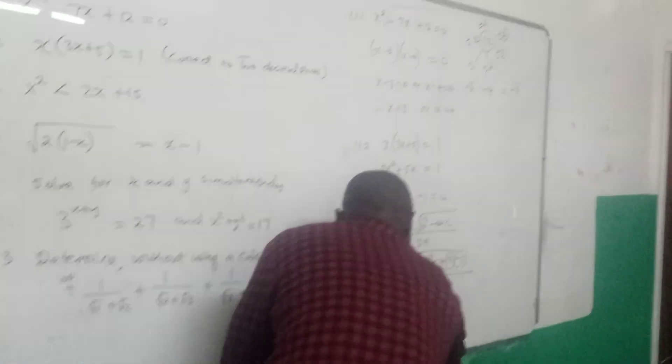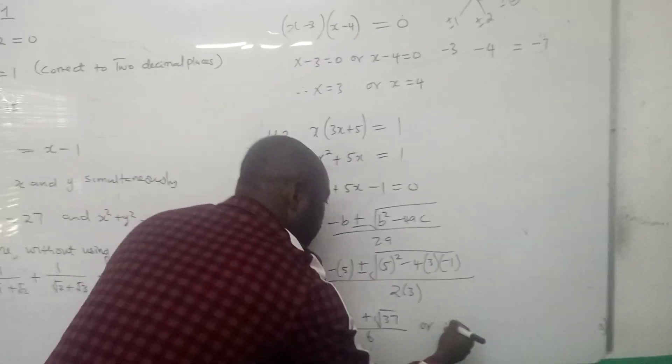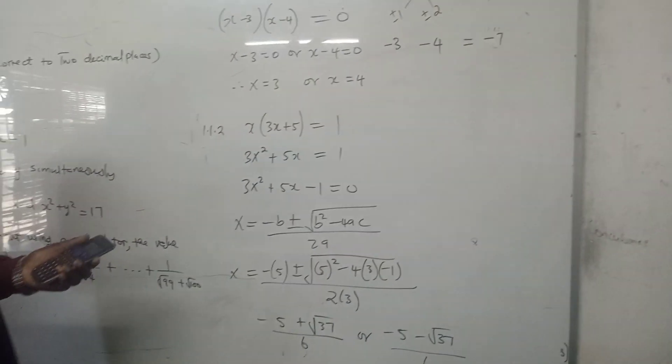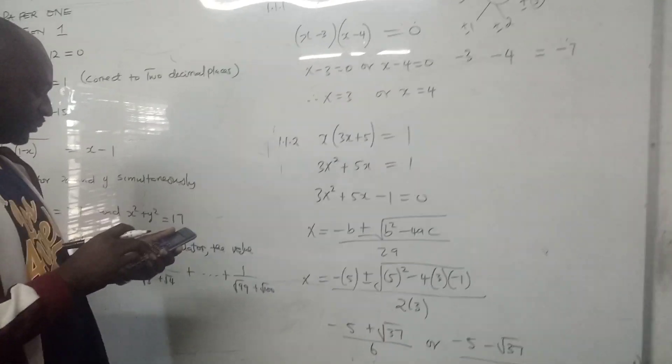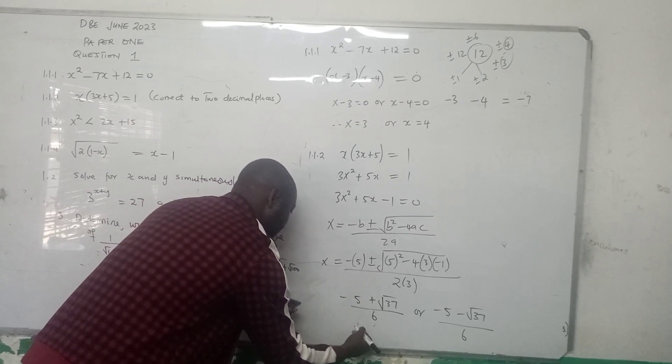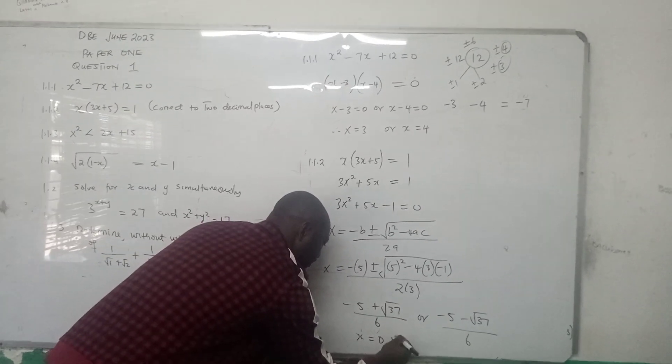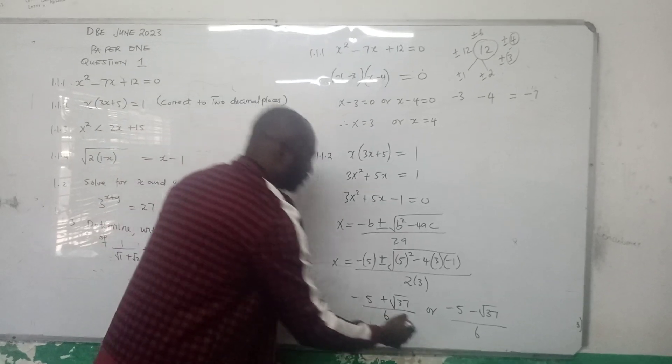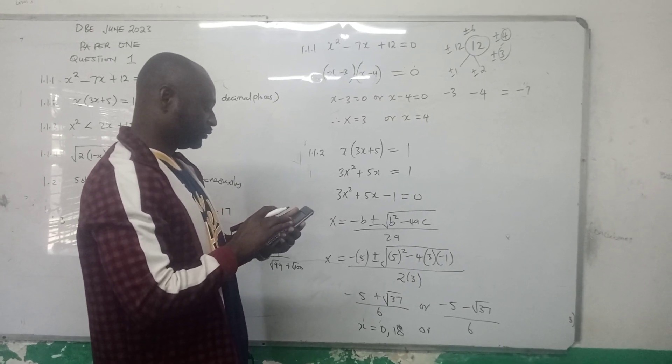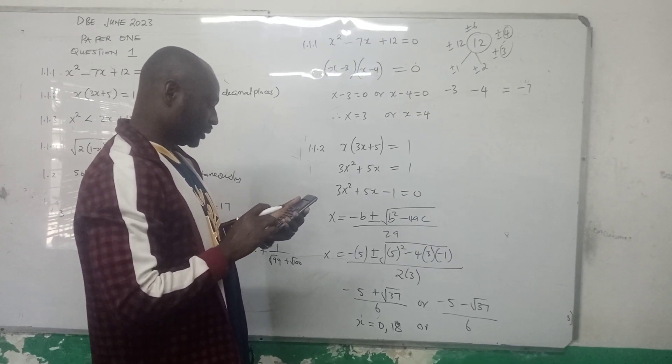Then it will give you this. So it will give you minus 5 plus square root of 37 over 6 or you get minus 5 minus square root of 37 over 6 as a surd form. Then you press SD button on the calculator and this will give you x is equal to 0.18. This is to 2 decimal places, 0.18. Or you come here and you move the minus sign.